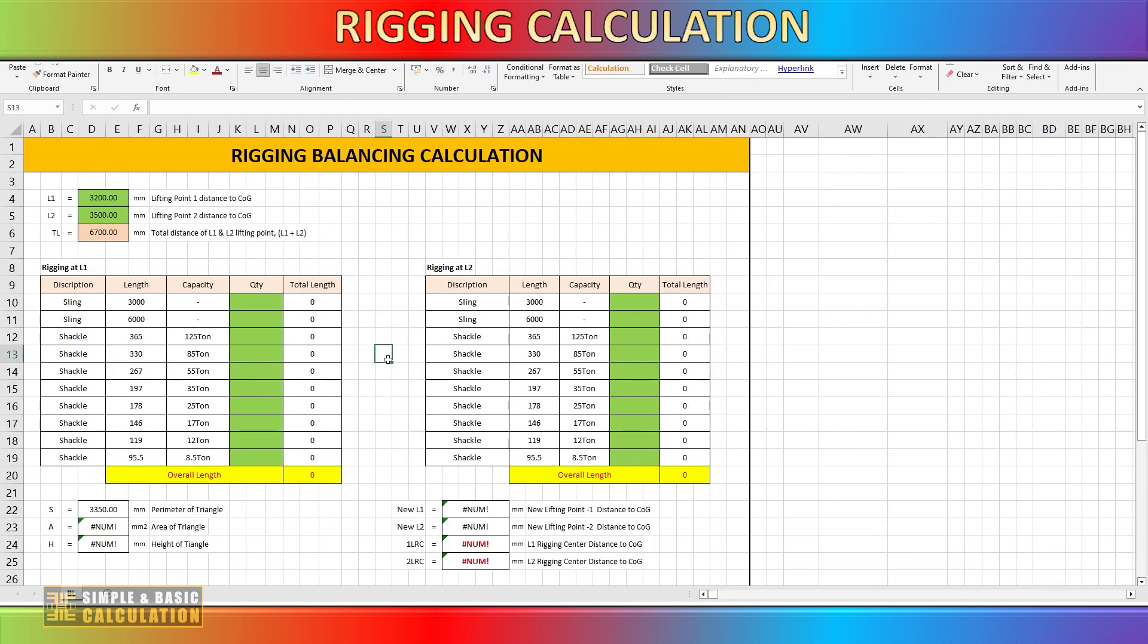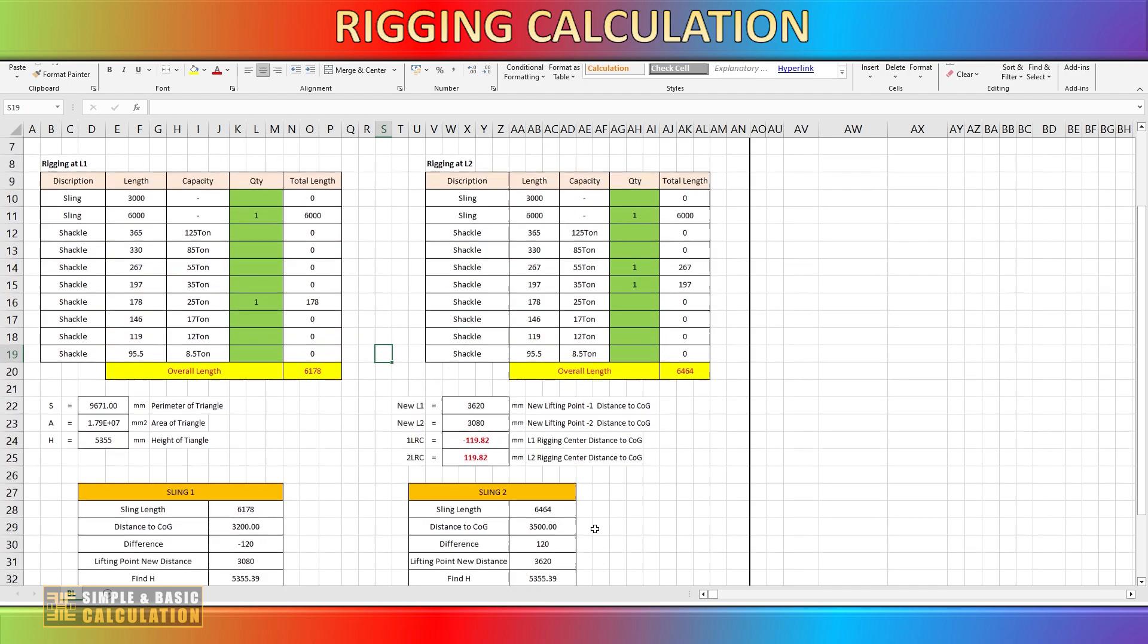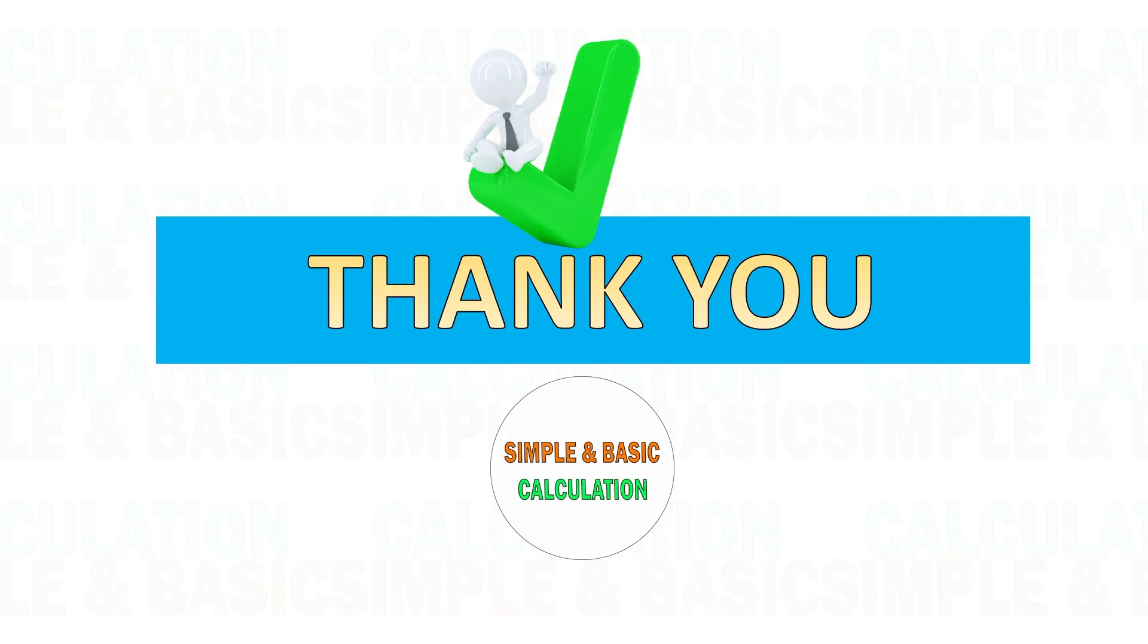Here is the spreadsheet. By inputting the required data, it automatically calculates the distance of rigging center line to cargo center of gravity, also the degree of cargo tilt. Thank you.